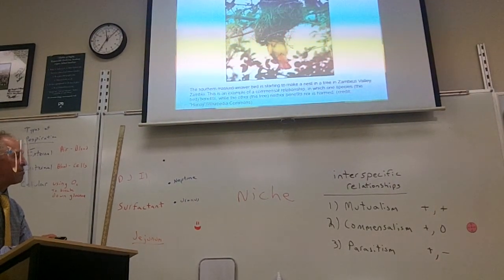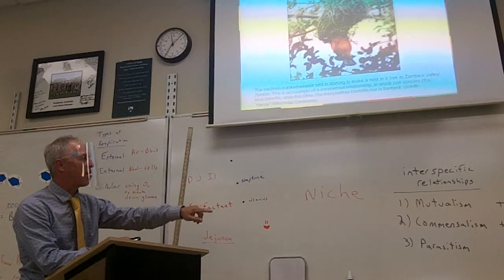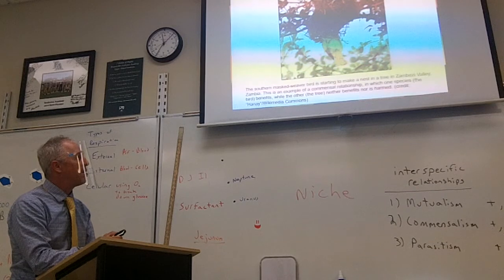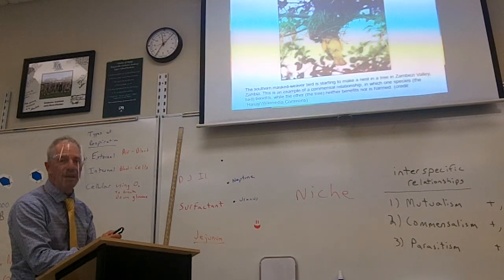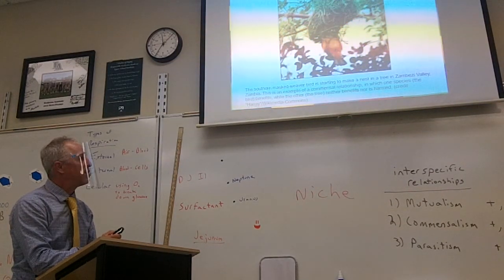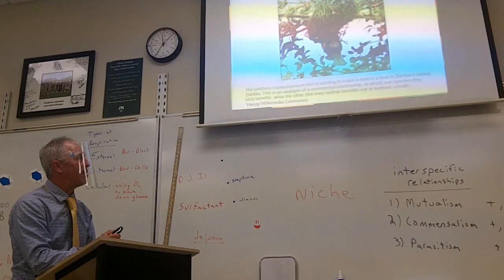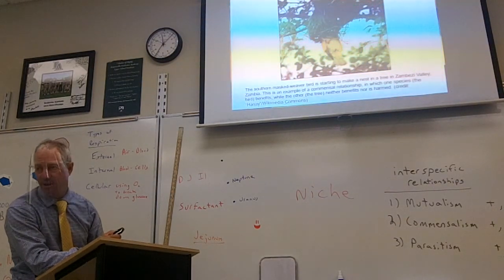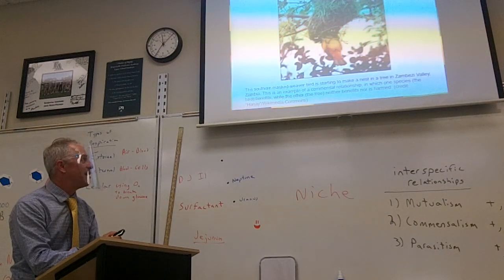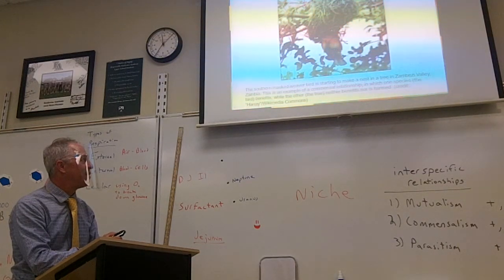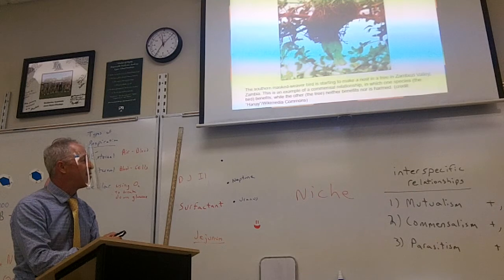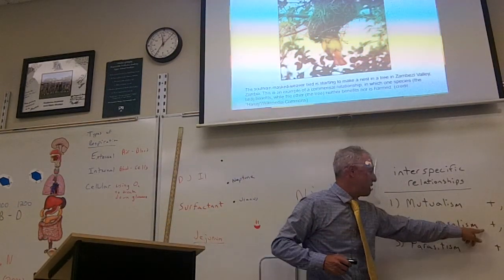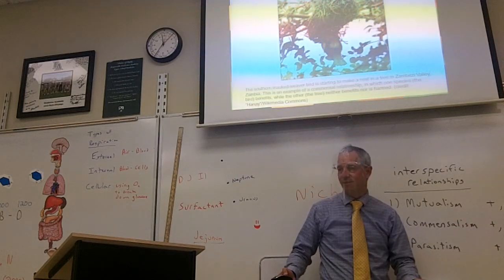There's three types of inter-specific relationships. We talked about them yesterday. This is an example of commensalism - a bird making a nest in the tree. The tree doesn't benefit from the bird being there, it could, but the tree isn't really hurt by the bird being there. It's kind of oblivious to the bird, but the bird has a place to live. So the bird benefits, tree does not. That's commensalism.